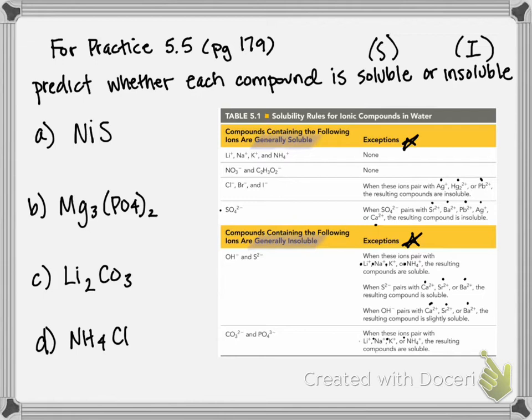So look at the first compound. That is nickel to sulfide. Sulfide, we can find, and typically it's done based on the anion, unless it's ammonium. So sulfide is down here in our default insoluble category. But we can look and make sure that nickel is not one of our exceptions. So nickel is not listed anywhere in the exceptions. Therefore, nickel to sulfide is considered insoluble. And I'm just going to put an I for that.